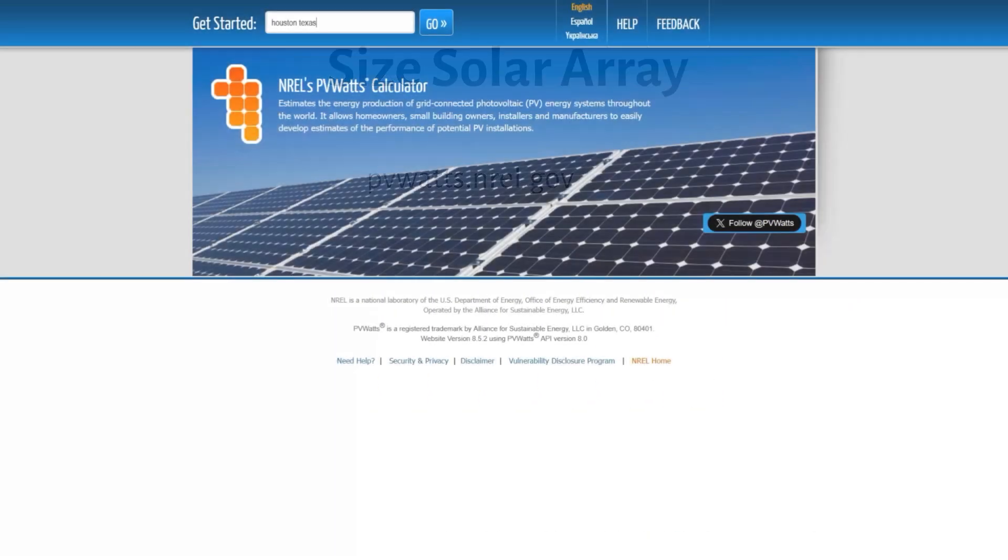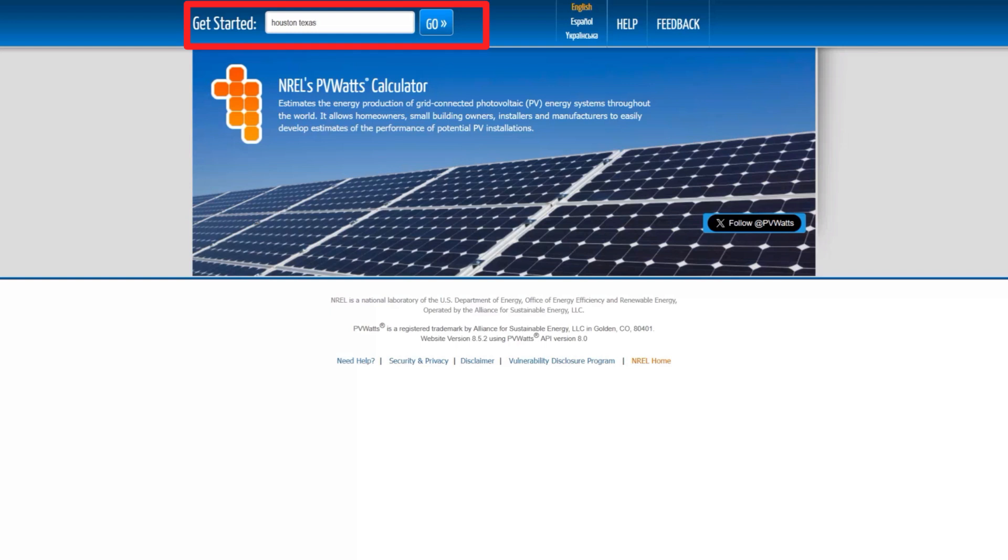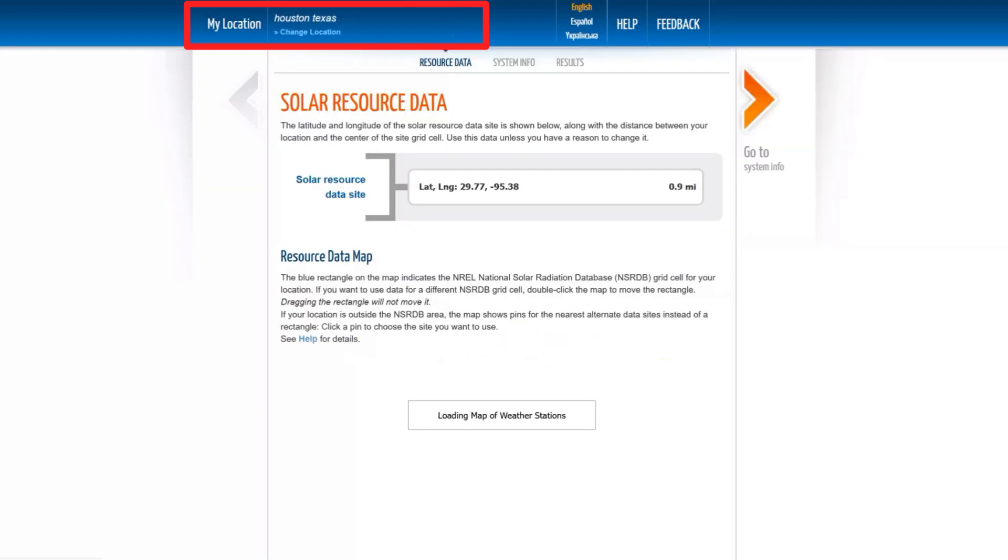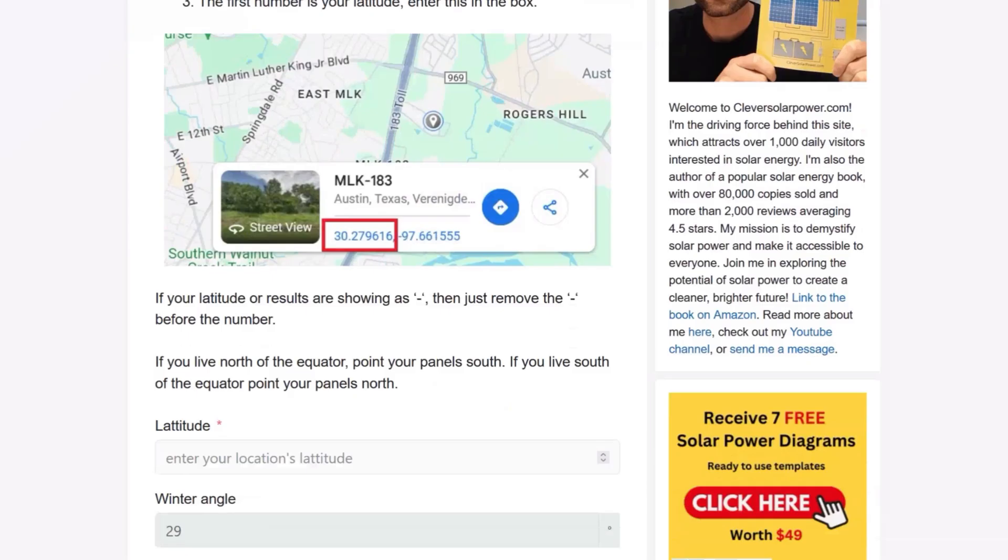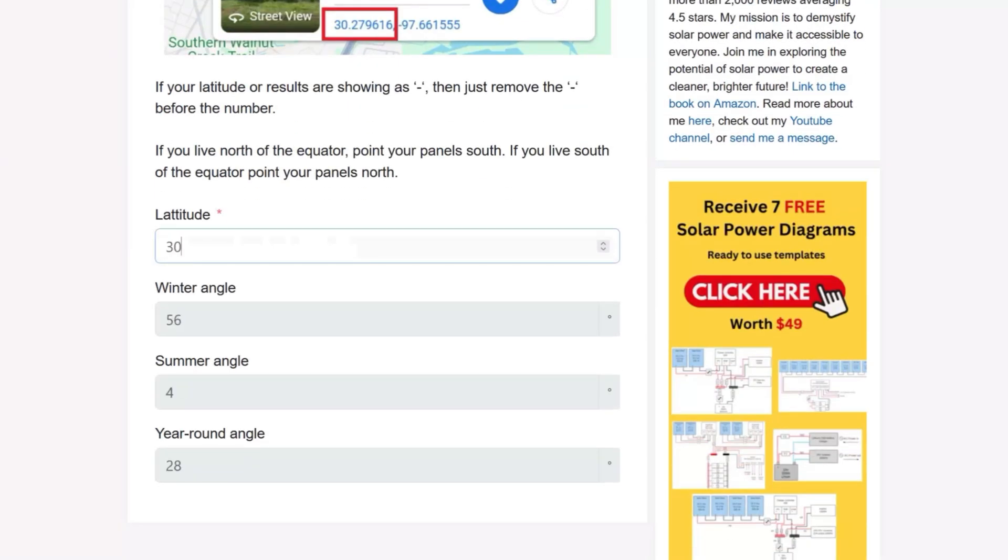Go to PVWatts and enter your location. I'm using Houston, Texas. Click go and note the latitude. That's the first number. Then use my website calculator to get the tilt angle for the solar panels.